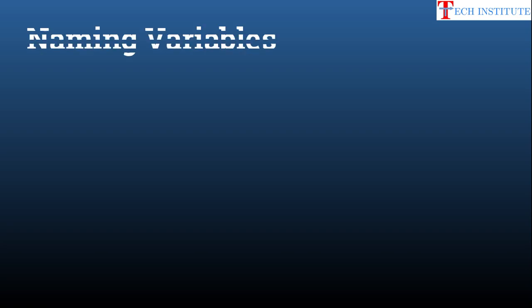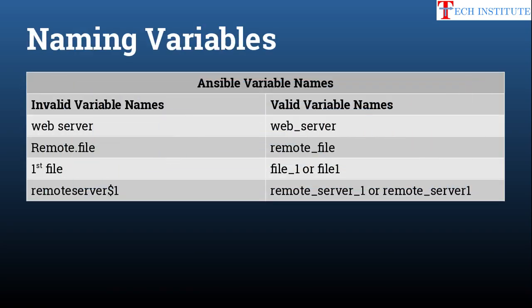First, you will see how you can name your variables. On the left side of the table you have invalid variable names, and on the right side you have valid variable names. For example, 'web server' should be 'web_server'. 'remote.file' is not valid — you must use 'remote_file'. 'first file' is invalid; use 'file_one' or 'first_file' instead.